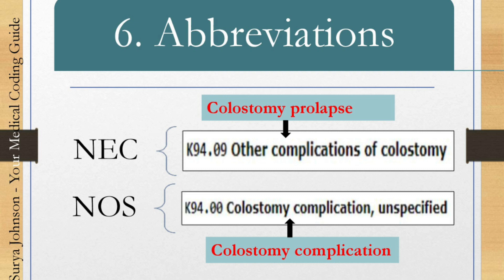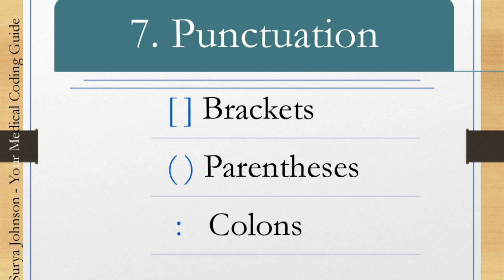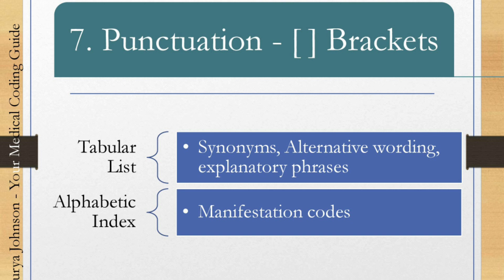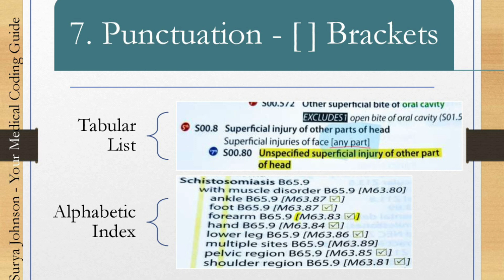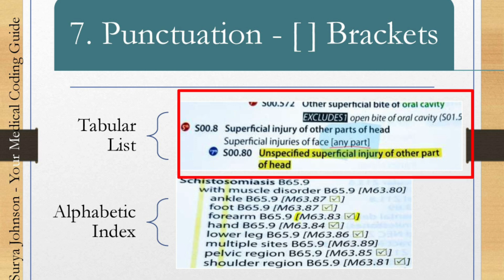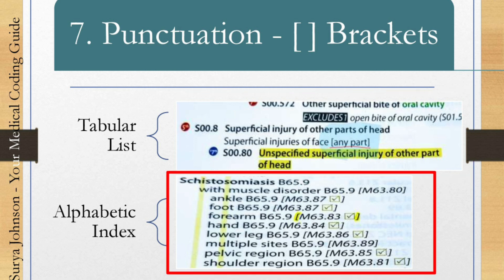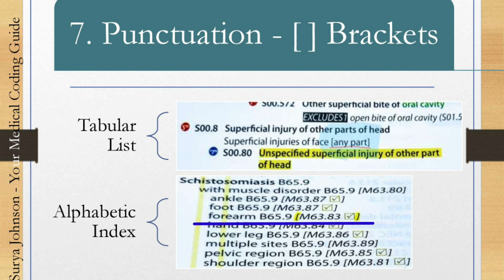The seventh convention is punctuation. In the tabular list, brackets mean synonyms, alternative wordings, or explanatory phrases. For example, 'superficial injury of face' has a bracket stating 'any part' — meaning forehead, chin, cheeks, nose, wherever it is. In the alphabetic index, brackets are used for manifestation codes. For example, under schistosomiasis, B65.9 has a bracket with M63.83, which is the manifestation code.